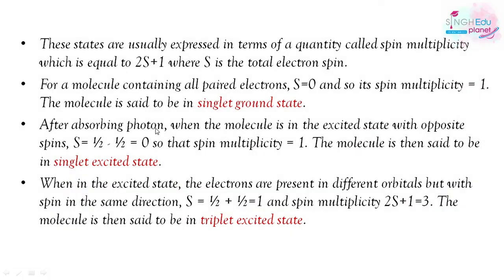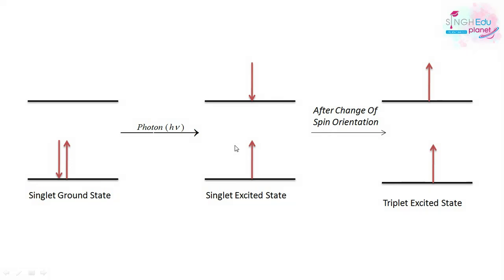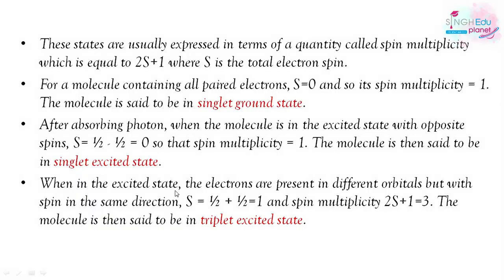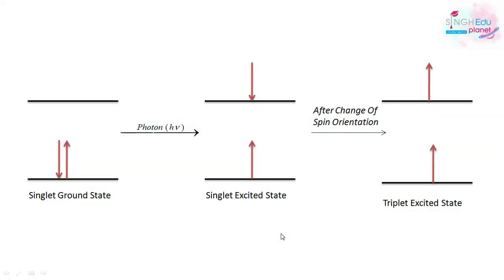In the second case, if the molecule absorbs a photon and the spin changes, the spins of the two electrons are now parallel rather than paired. They will be added together, giving S = 1, and spin multiplicity = 2(1)+1 = 3. So we say the molecule is in a triplet excited state — spin multiplicity 3, excited due to spin change.